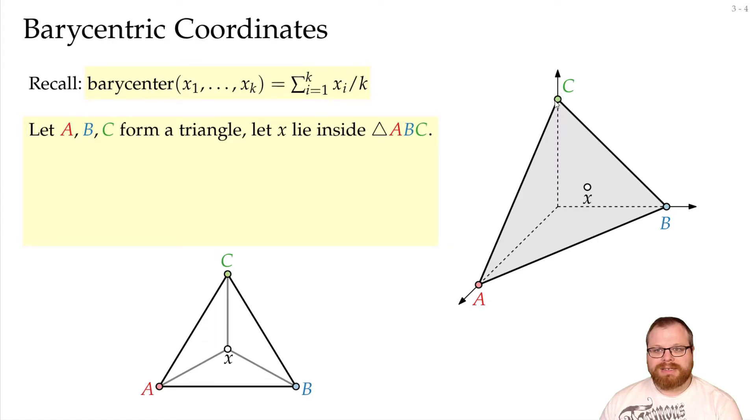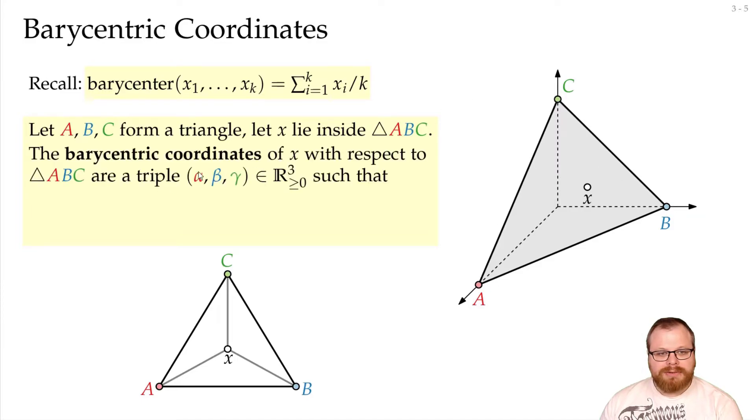Formally, that means that we can define a barycentric coordinate for every point on this triangle, which consists of three values alpha, beta, and gamma. Where these three numbers tell us by how much we have to multiply these vectors a, b, and c, and the sum of these three numbers has to be exactly 1. Then we get exactly this triangle here.